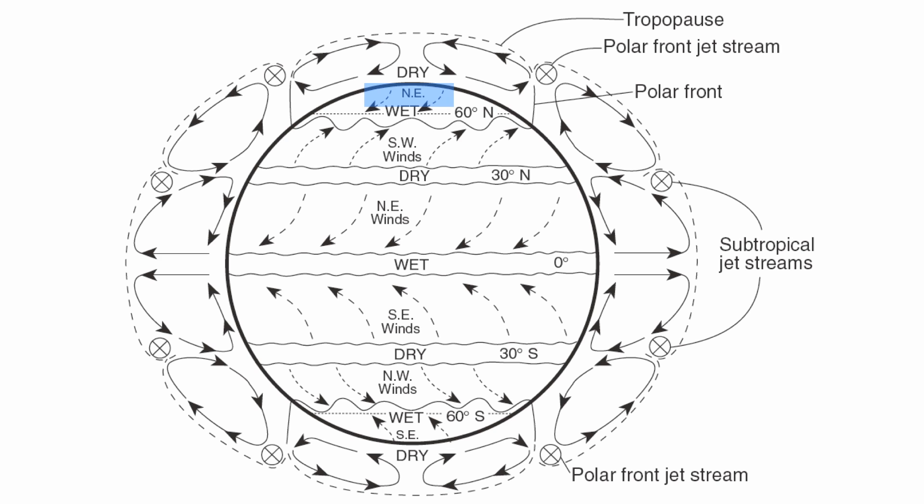Starting at the North Pole, winds are named from the direction in which they come from. We start with the polar easterlies, which come from the Northeast. Then we move into the westerlies, then the Northeast Trade Winds. Those are all in the Northern Hemisphere. In the Southern Hemisphere, we have the Southeast Trade Winds, the westerlies again, and another set of polar easterlies.